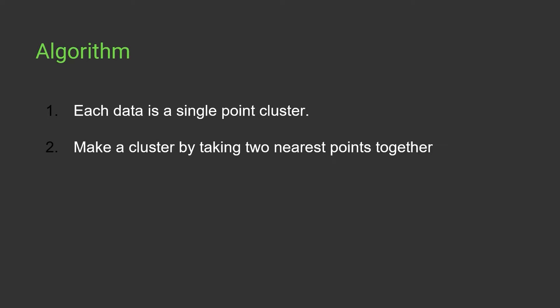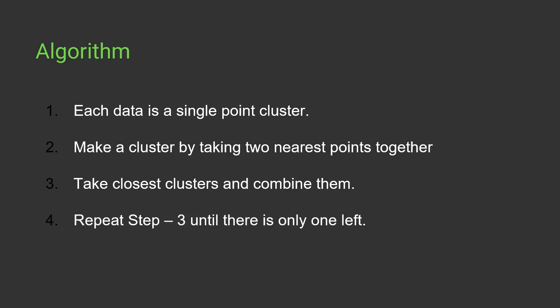Then it makes a cluster by taking the two nearest points together, then takes the closest clusters and combines them, and finally repeats that step until there is only one cluster left. So initially we consider all data points as individual cluster points, then in the second step we combine the two nearest points to make a cluster, then in the third step we compare different clusters based on distance, and in step four we repeat until we reach a single cluster.